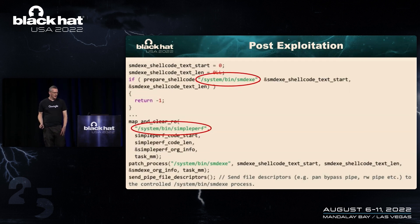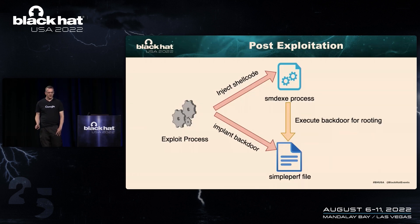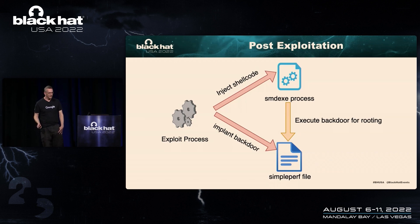For UID zero, it's a little more complicated. The real-time kernel protection mechanism trusts its own executables. System bin SMD EXE is executed as a privileged process, giving an initial point of entry. A second executable, simpleperf, is used to get the full backdoor running. Shellcode is injected into SMD EXE, which then calls RKP_override_creds — because it is a trusted privileged process — setting itself to root UID zero. The full backdoor has been put into simpleperf. SMD EXE then runs simpleperf, at which point we have the entire backdoor running as UID zero and SELinux effectively in permissive mode.